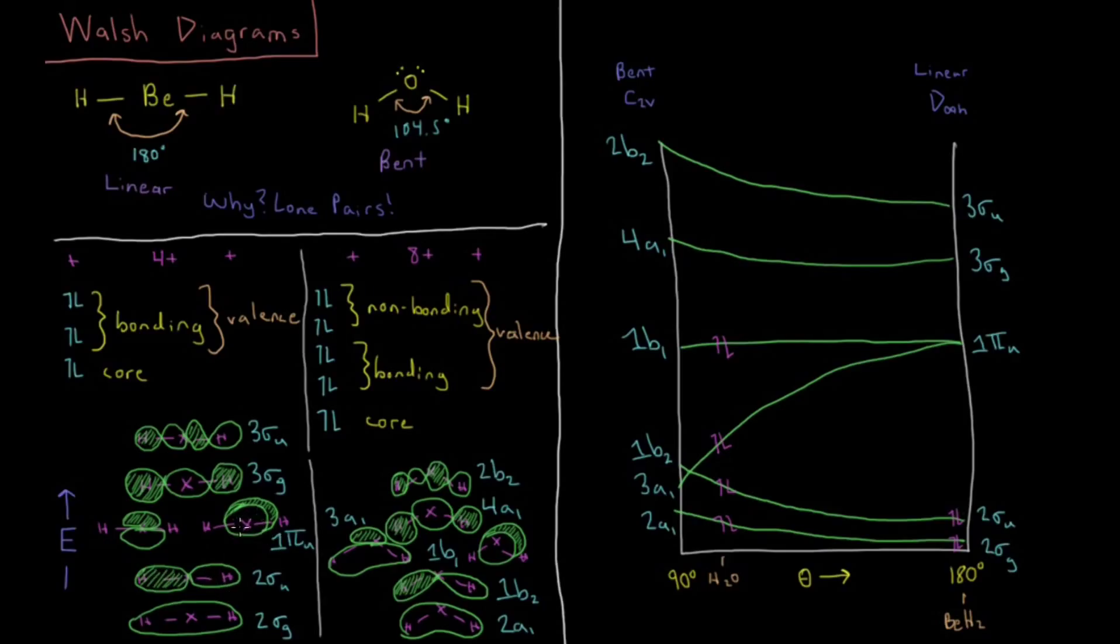And then there would be non-bonding pairs in the p orbitals, in the px and py, up there pretty much neutral, no overlap with the hydrogen atomic orbitals.